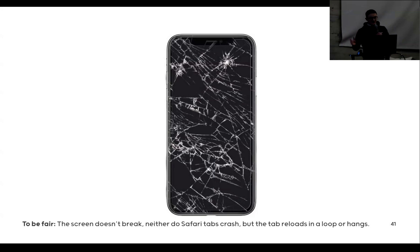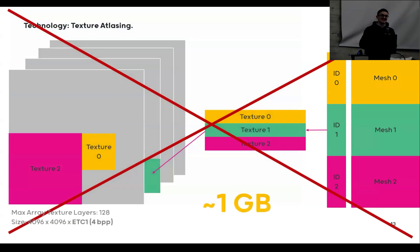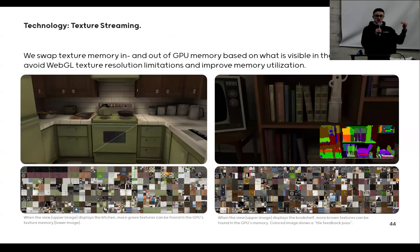I didn't find a screenshot for iOS Safari crashing, so a broken screen obviously doesn't break your screen. Neither do Safari tabs crash, but they will usually just reload or hang. So what if you want to do an 8K texture? I mean, and mipmaps. I mean, this is all kind of not the right approach.